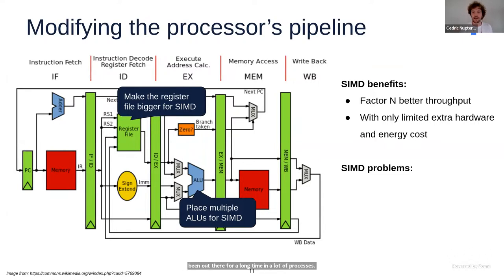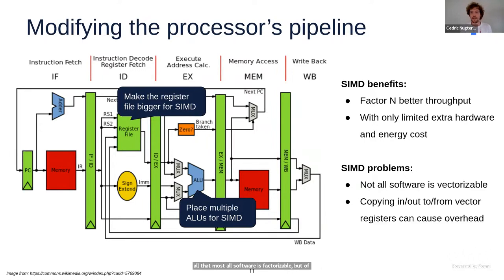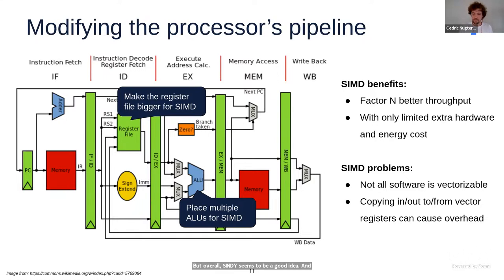Why is SIMD a good idea? In a typical microprocessor, you take the ALU — the arithmetic logic unit — and make it wider so it can do four multiplications at the same time. You also make the register file bigger. The main benefit is vector-N better throughput, but the extra hardware and energy costs are very limited. You don't have to quadruple all the hardware — only certain smaller components. That's why SIMD has been out there for a long time in many processors.